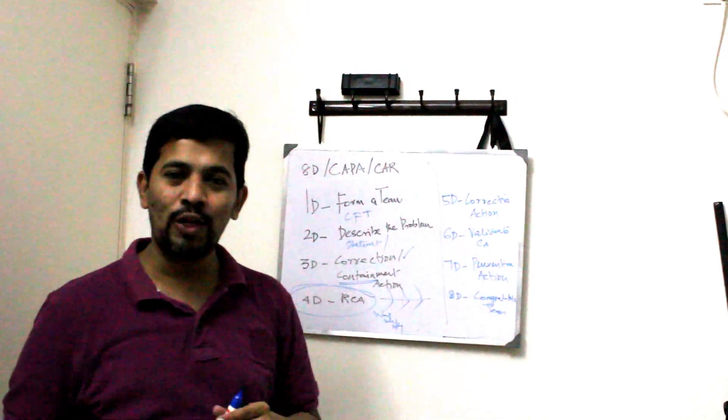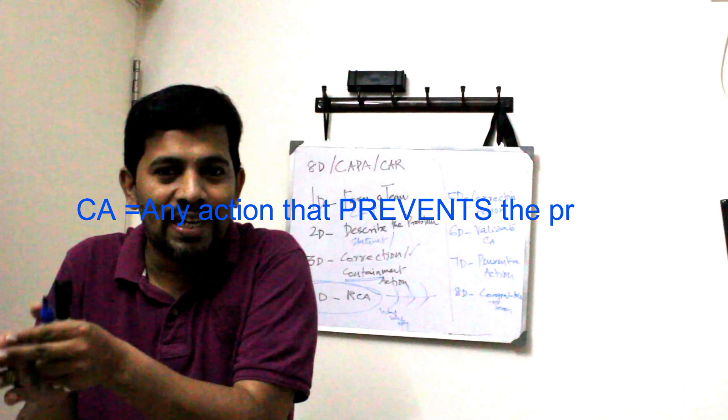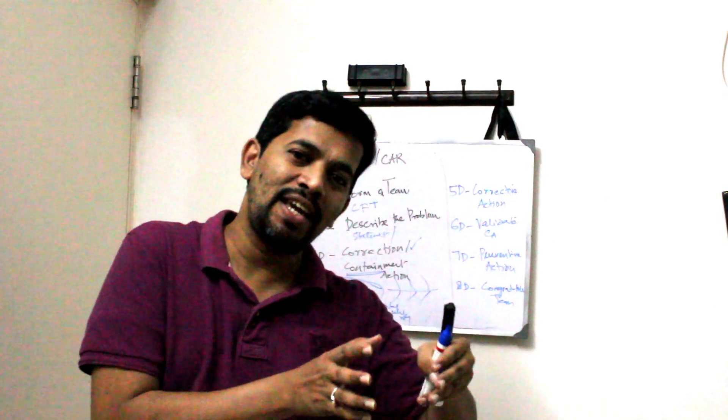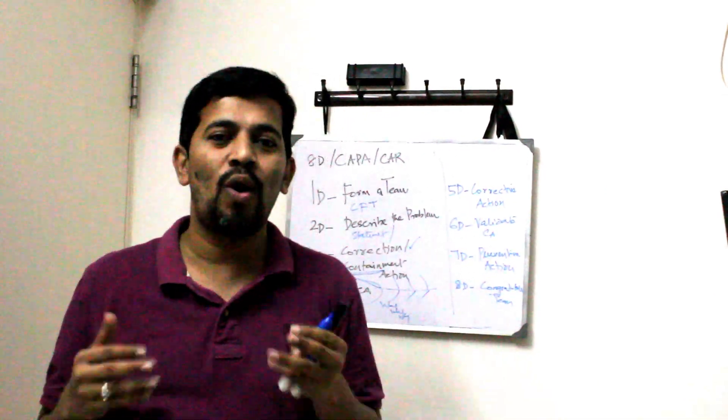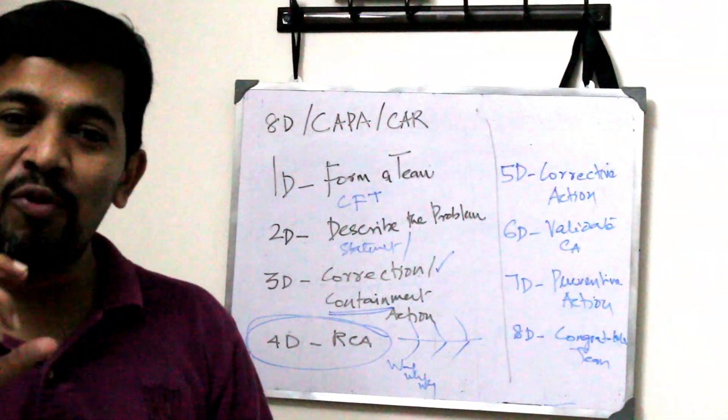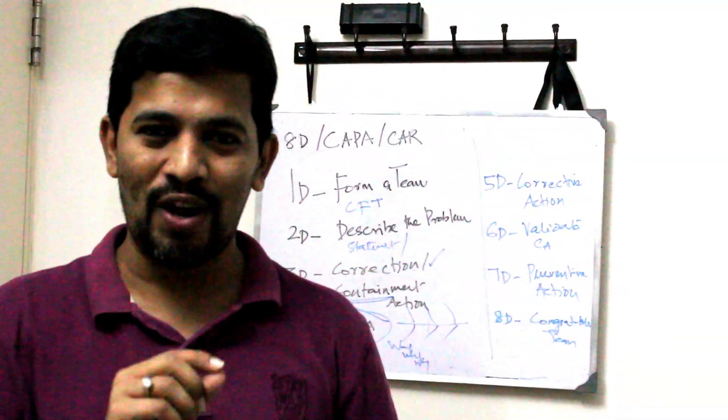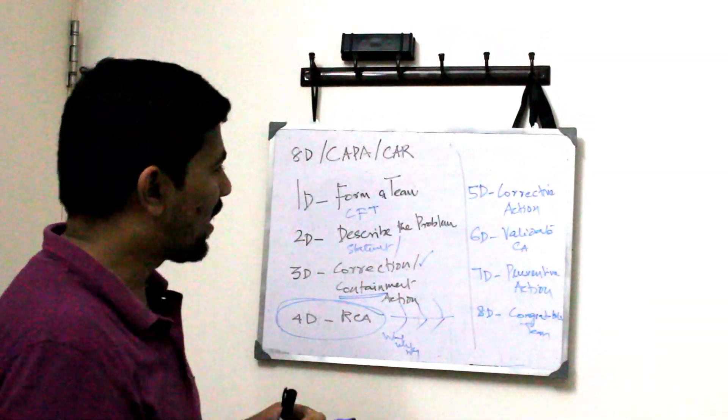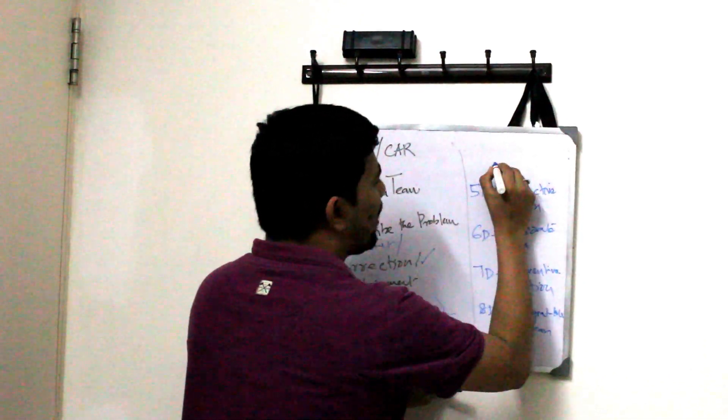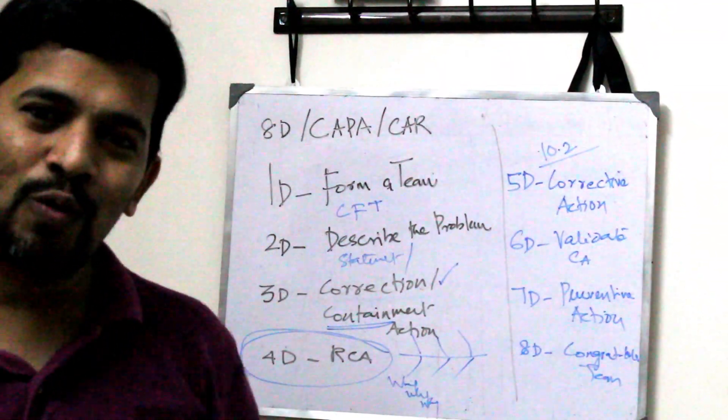And then you have called corrective action. This corrective action from the normal English word and the ISO context is different. What does it mean by that? The word corrective action meaning like anything which prevents the problem. Anything which prevents the problem is called corrective action. Where do you get the reference? You will get the reference in clause number 10.2.